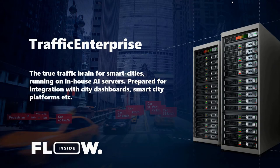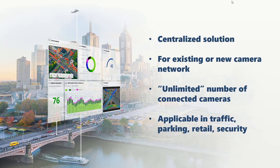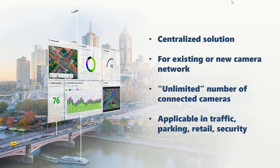The last product from the Flow family that we are going to introduce today is called Traffic Enterprise. It's a traffic sense running on in-house servers, converting camera streams into a universal sensoric network. Traffic Enterprise is a centralized solution which allows you to connect an endless number of cameras and create real collaborative traffic intelligence. The advanced Traffic AI works automatically and detects and tracks all objects in the camera view, including pedestrians up to bicycles. It's a very suitable option for an already existing camera network in a city, and the system can easily communicate with other parts of your smart city infrastructure.